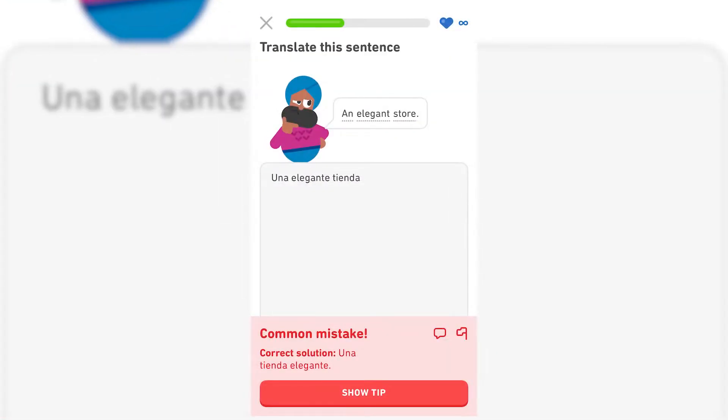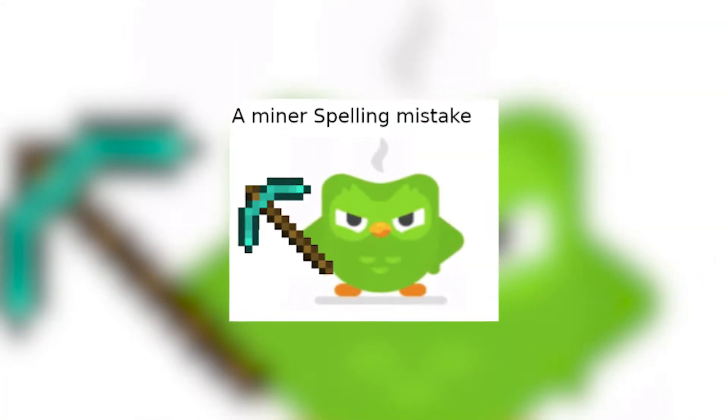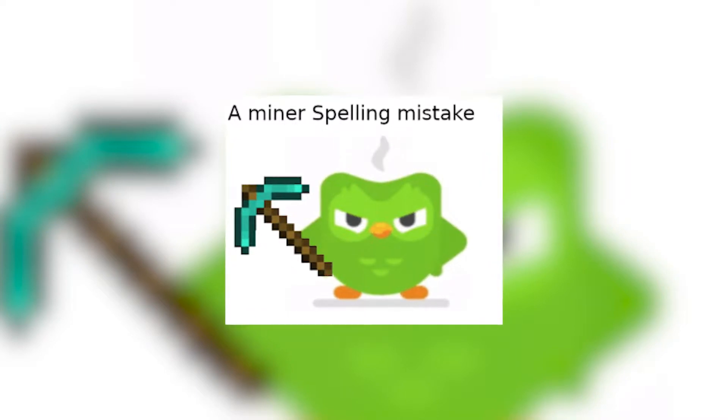A common problem I have with Duolingo, Memrise, and apps like that is that if you make a typo — even if you know the answer and you know you've done it right but you press the wrong key on your keyboard — the app will still tell you you're wrong and you get punished for that. This is something you just don't get with flashcards and with Anki.